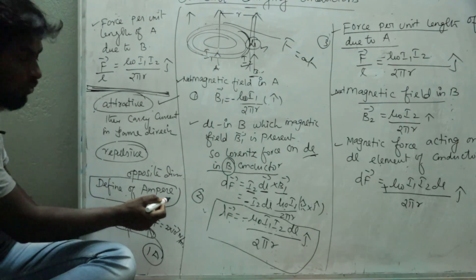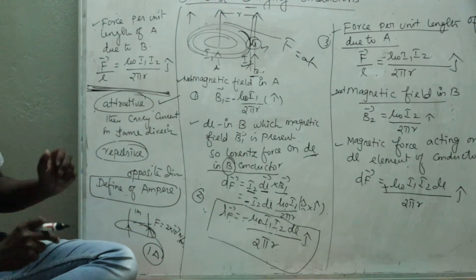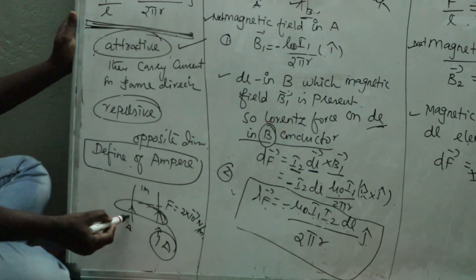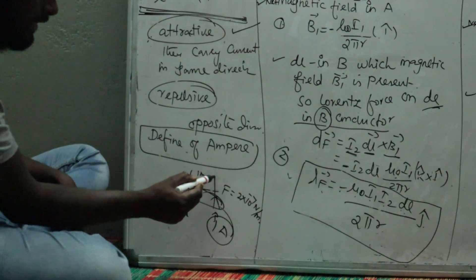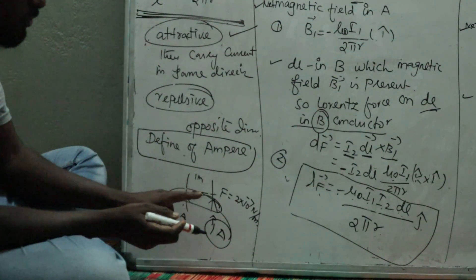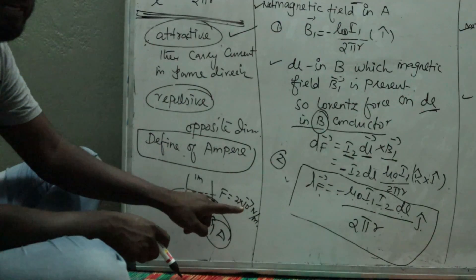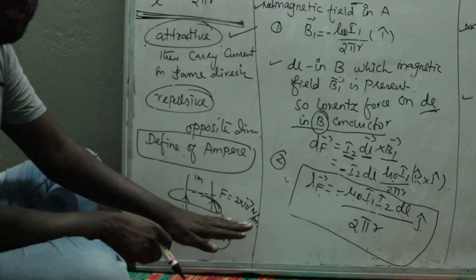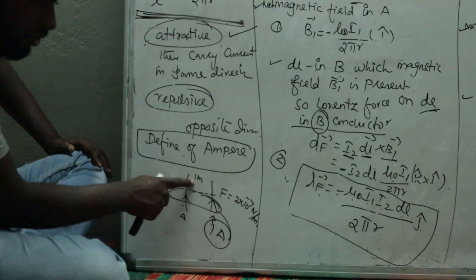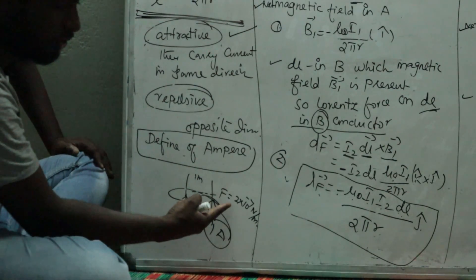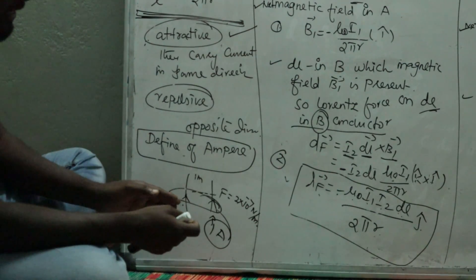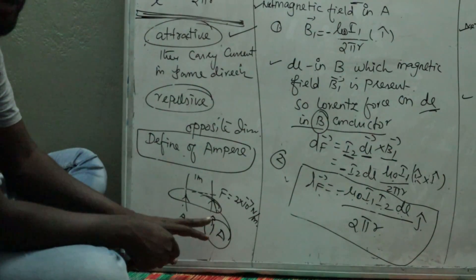The definition of Ampere is based on two long parallel current-carrying conductors. If two long parallel conductors A and B are separated by a distance R equal to 1 meter, and they experience a force of 2 × 10⁻⁷ newtons per meter, then the current flowing in both conductors is defined as 1 Ampere.